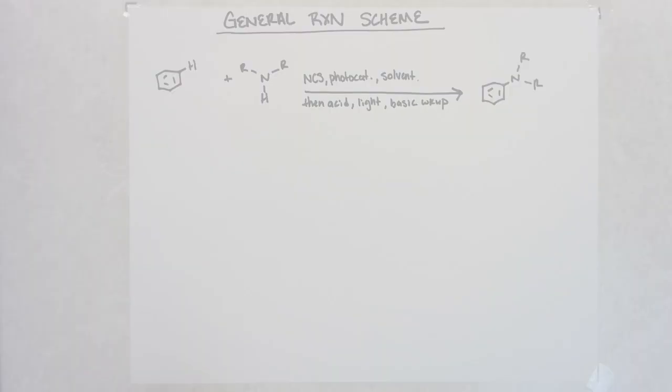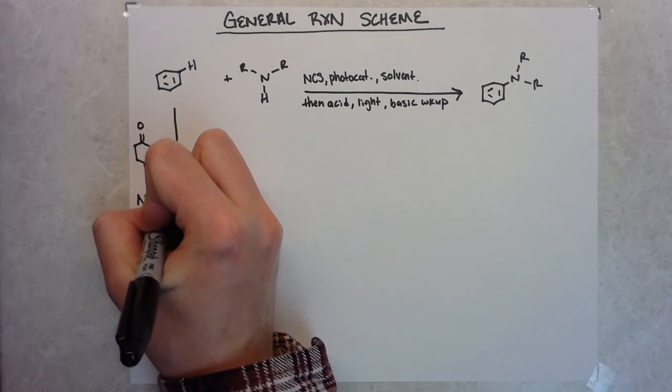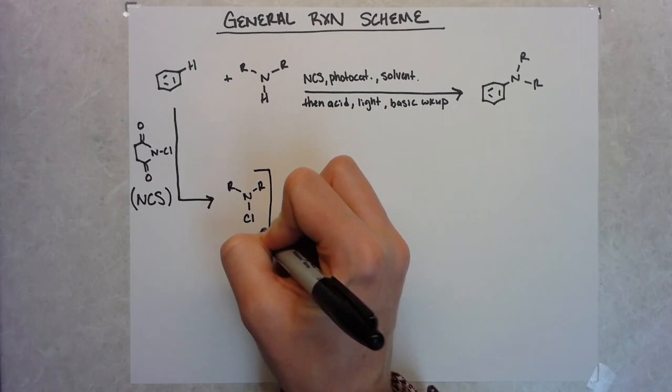So before we get too far into the details of this paper, let's go through this reaction again and make sure that we're all on the same page with the reaction that has been developed. So Leonori couples unactivated arines with primary or secondary amines to form CH amination products. And he does this by using NCS, a photocatalyst, acid, and light.